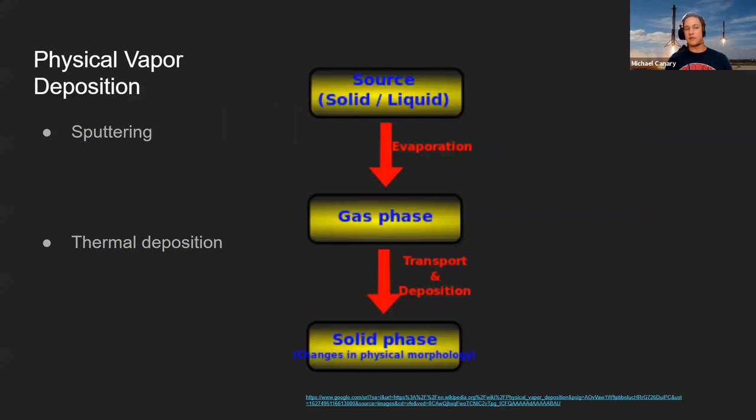And then with the physical vapor deposition, there are two main types we are trying to do. There is sputtering and thermal deposition. And all physical vapor deposition is, is you take a source material, and in this case, lithium. It's either going to be a solid or a liquid. We evaporate that, turn it into a gas, and then we transport that gas to the target where we're trying to make that fusion target, and it turns back into a solid.